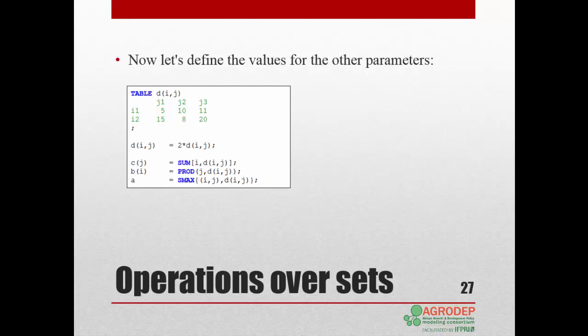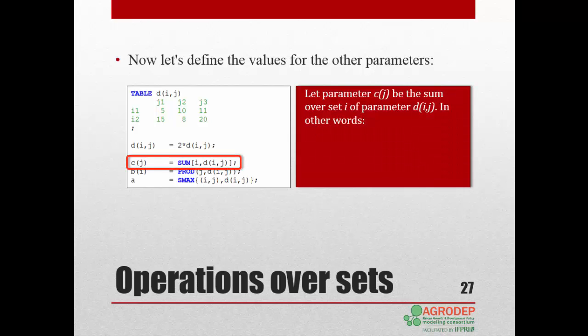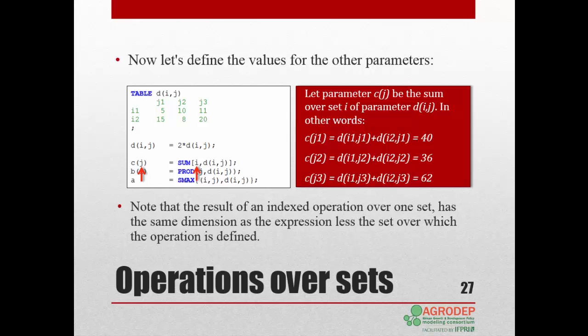Now let's define the values of the other parameters. Let parameter cj be the sum of a set i of parameter dij. In other words, the sum is over the rows of the table dij after each element of the table has been multiplied by 2. So the first element of c is now equal to 40, the second to 36, and the third to 62. Note that the result of an indexed operation over one set has the same dimension as the expression, less the set over which the operation is defined. So the dimension of c is that of dij, less i, the set on which the operator is defined.